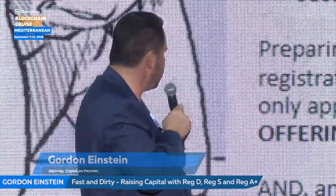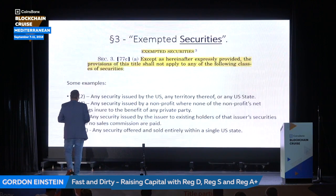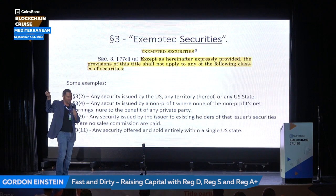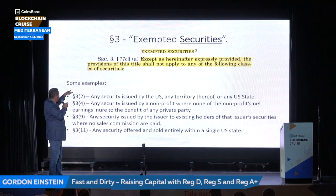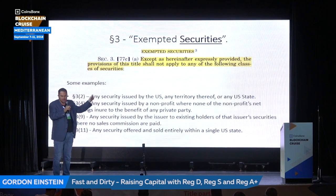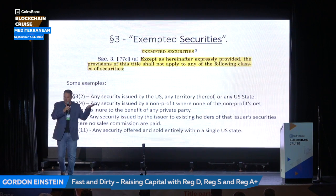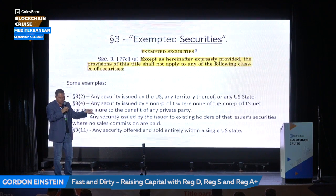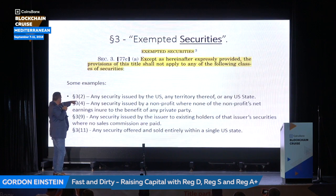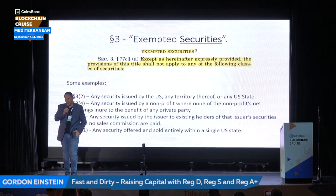Thank God — here comes the good news. Section 5 requires registration statements and prospectuses approved by the SEC. But we have Section 3, which covers exempted securities. Some securities, even though they fall under the definition, are not subject to the 33 Act at all. For example, if the US government or any state sells a security, it doesn't need SEC approval. There's also an interesting exemption: any security issued by a non-profit where none of the net earnings benefit a private foundation. Think about the Ethereum Foundation — you could theoretically set up a non-profit in the United States, issue securities, and so long as none of the profits go to related persons, be fine.